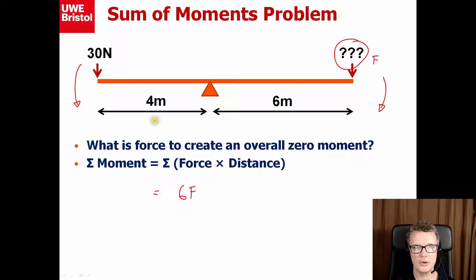the one on the left, we've got 30 times 4. All those moments need to equal 0, so 6F minus 120 equals 0, and we have that the answer